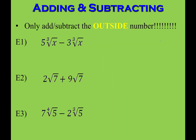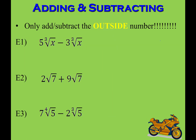You're only adding or subtracting the outside parts together. Here I have 2 cubed roots, both with the radicand x, so I'm allowed to subtract the outside numbers: 5 minus 3 is 2, and the cubed root of x stays the same. It's like saying you have 5 cows and someone eats 3 — now you only have 2 cows left.